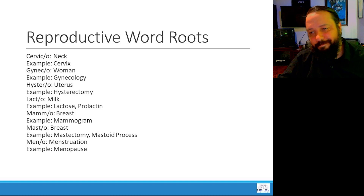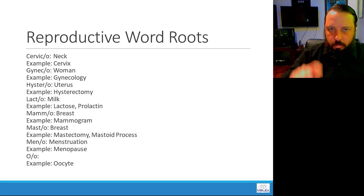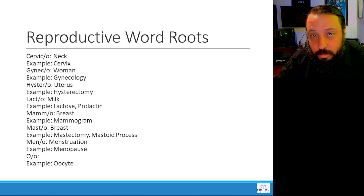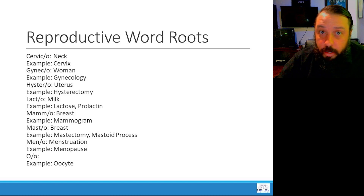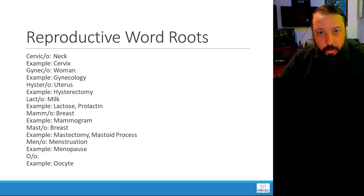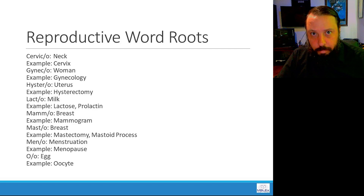Moving on to oo — the prefix oo. An oocyte is a prime example. An oocyte is produced by an ovary and released from an ovary once a month. An oocyte is an egg cell, so oo means egg.